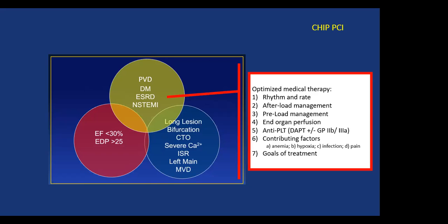This is a multi-team approach. Before we do revascularization on these high-risk patients, we need to optimize their medical therapy in case it makes them asymptomatic — including heart rate and rhythm control, preload and afterload management, ensuring we're perfusing their organs (no point opening a vessel if the patient dies of brain ischemia), appropriate antiplatelet therapy from a PCI perspective, and addressing contributing factors such as anemia, hypoxia, infection, and pain, as all these negatively affect long-term outcome.